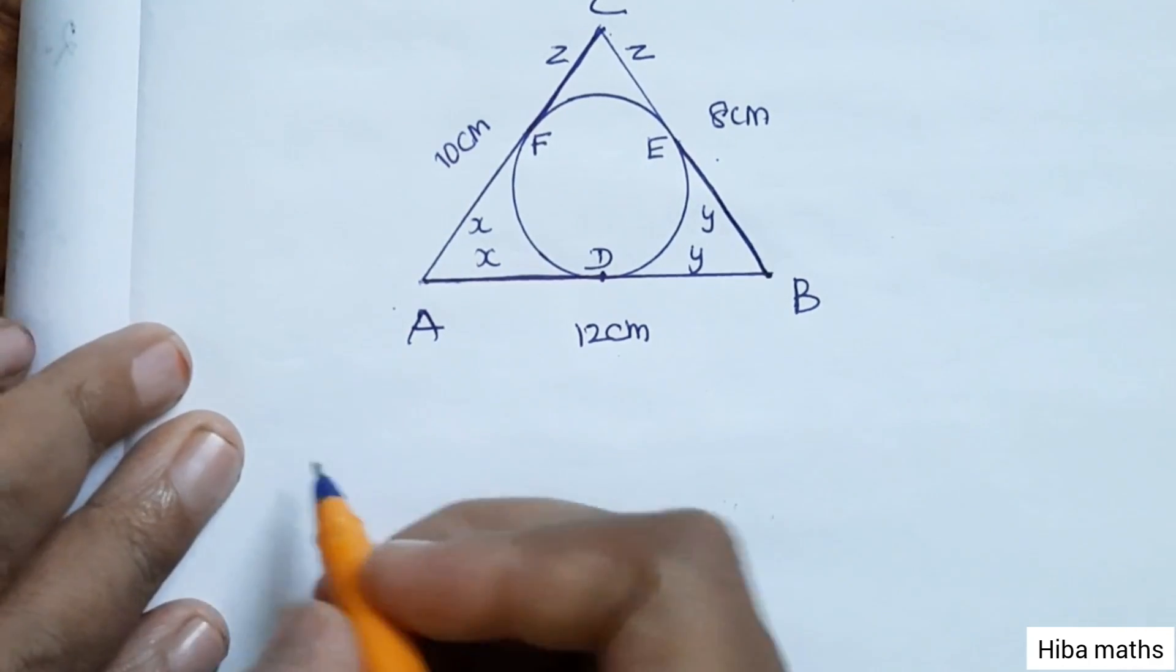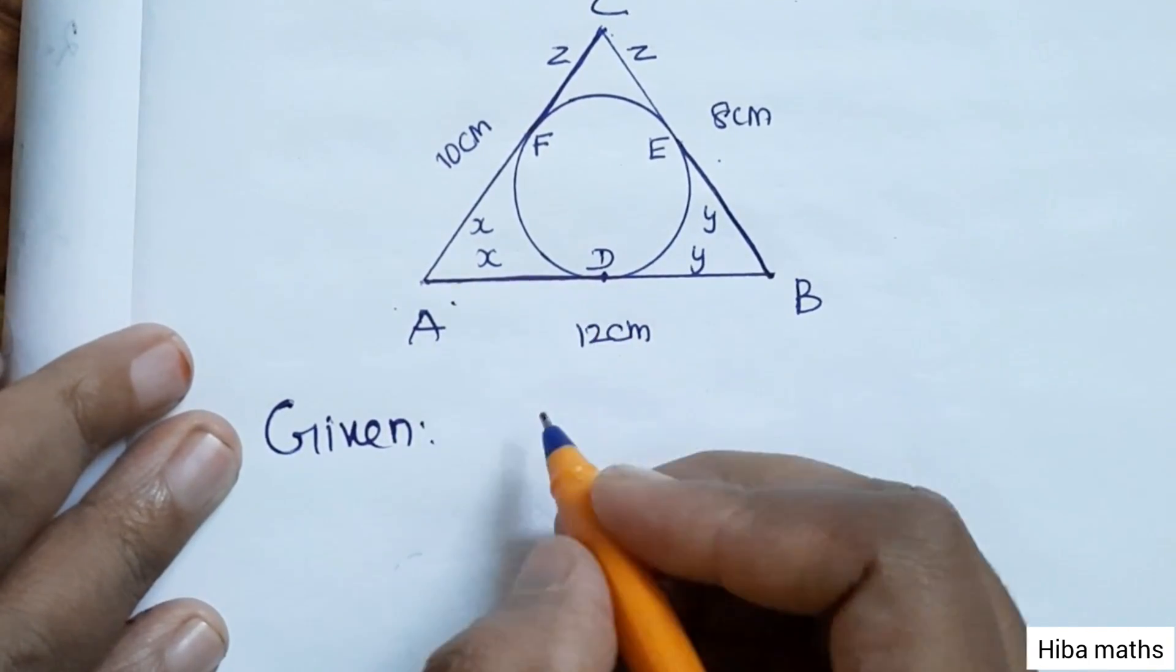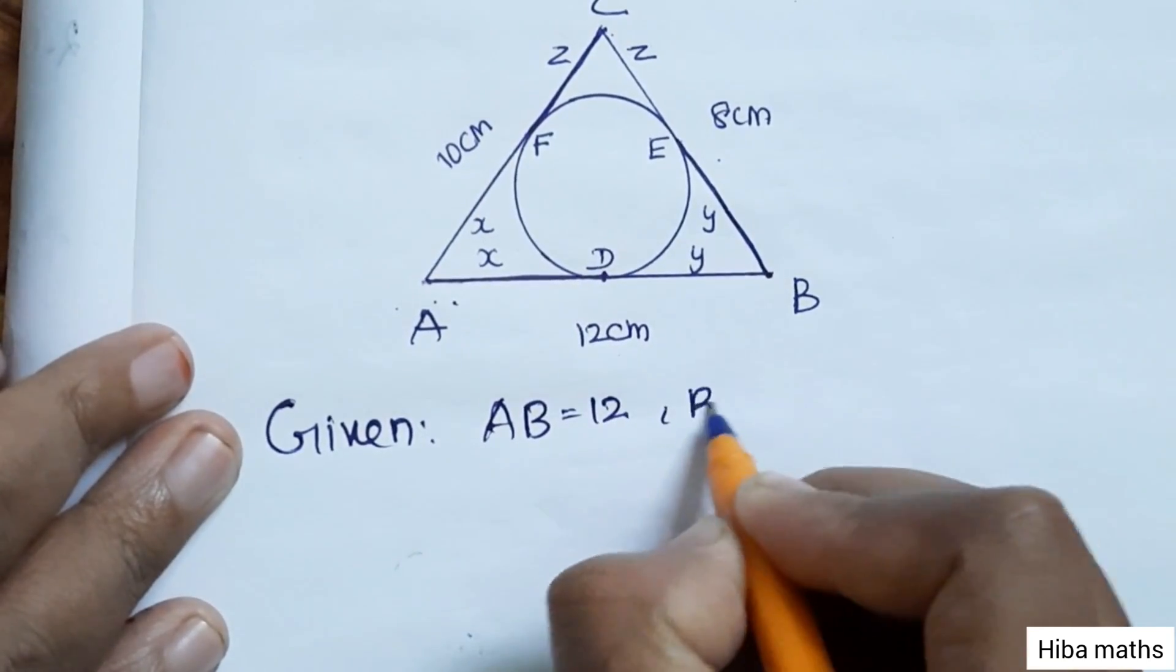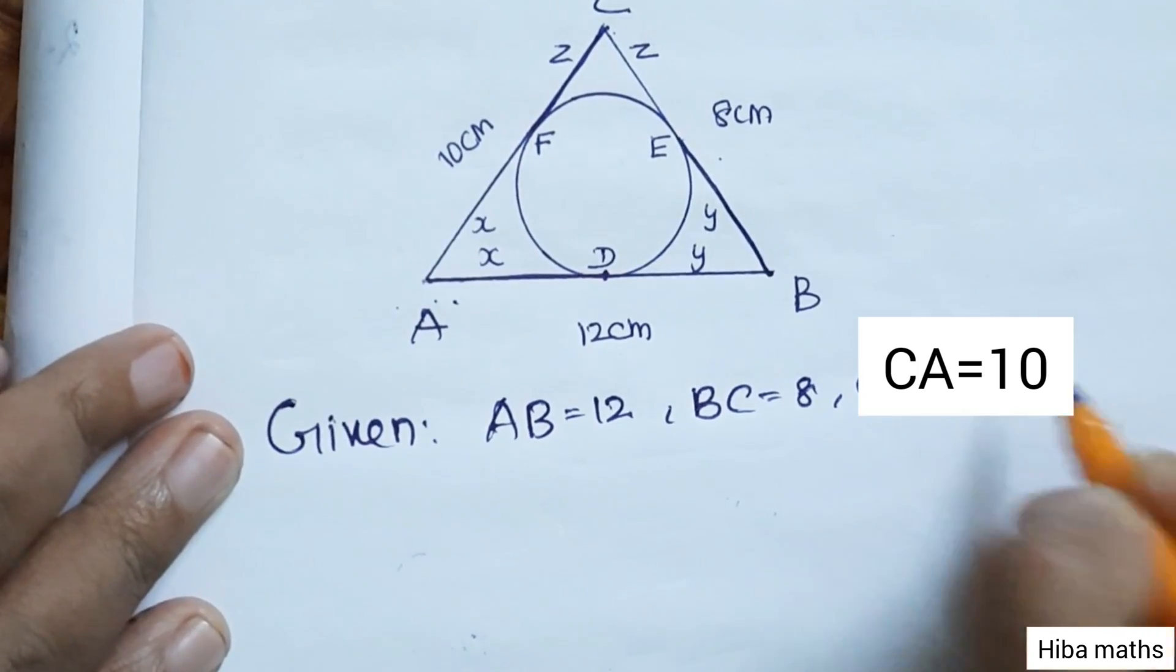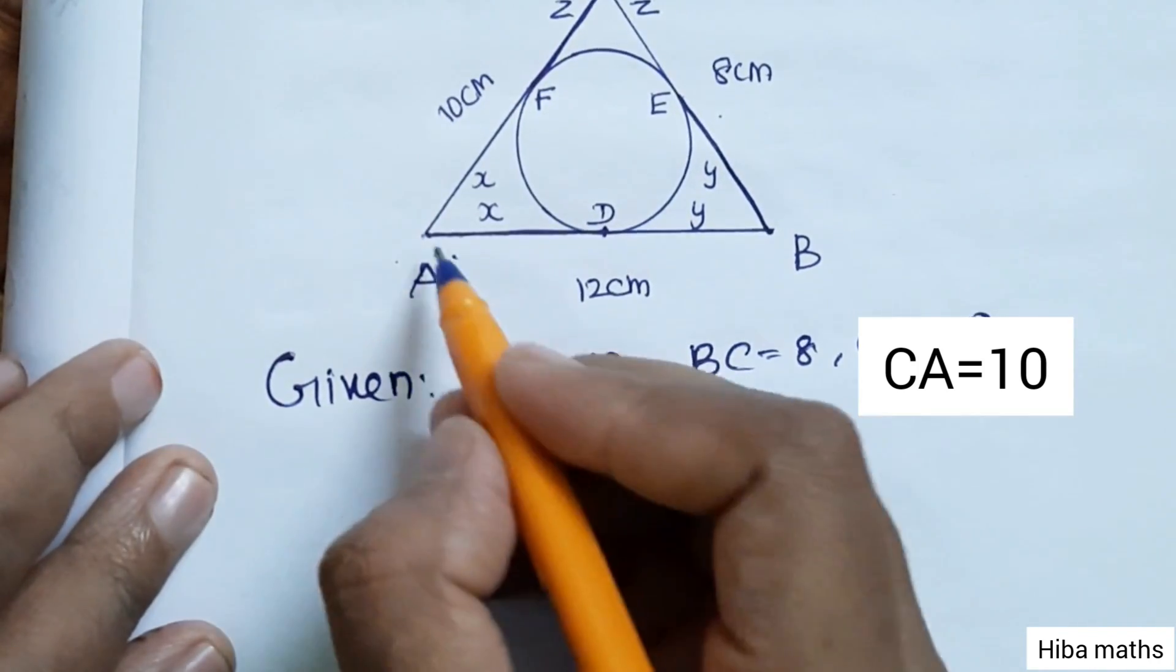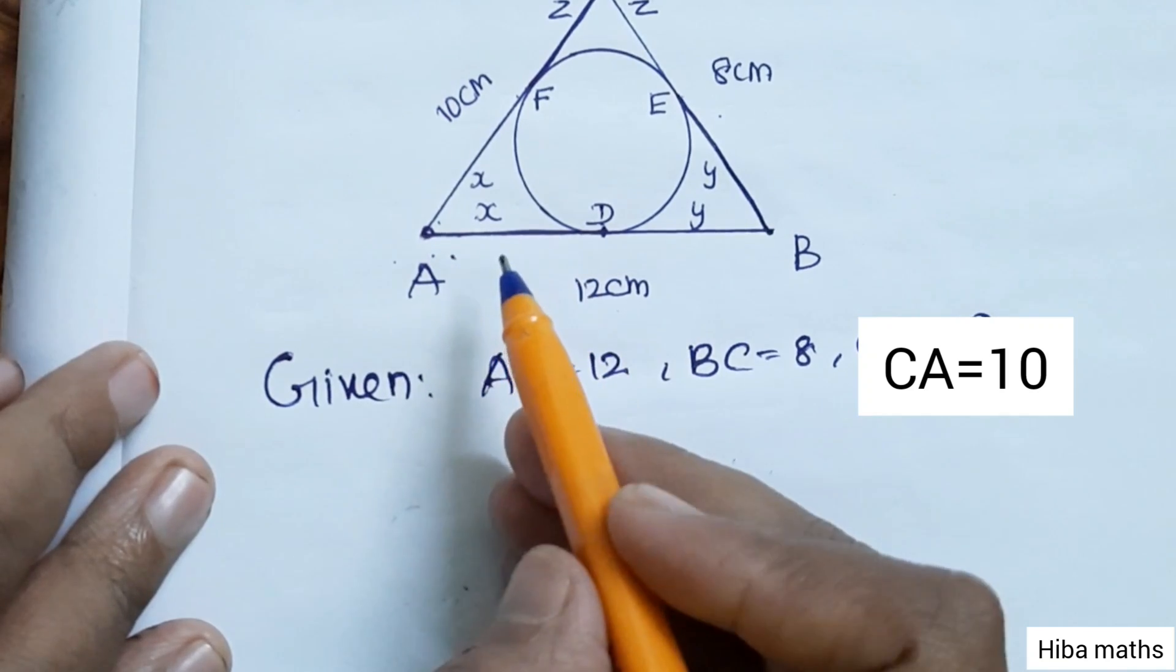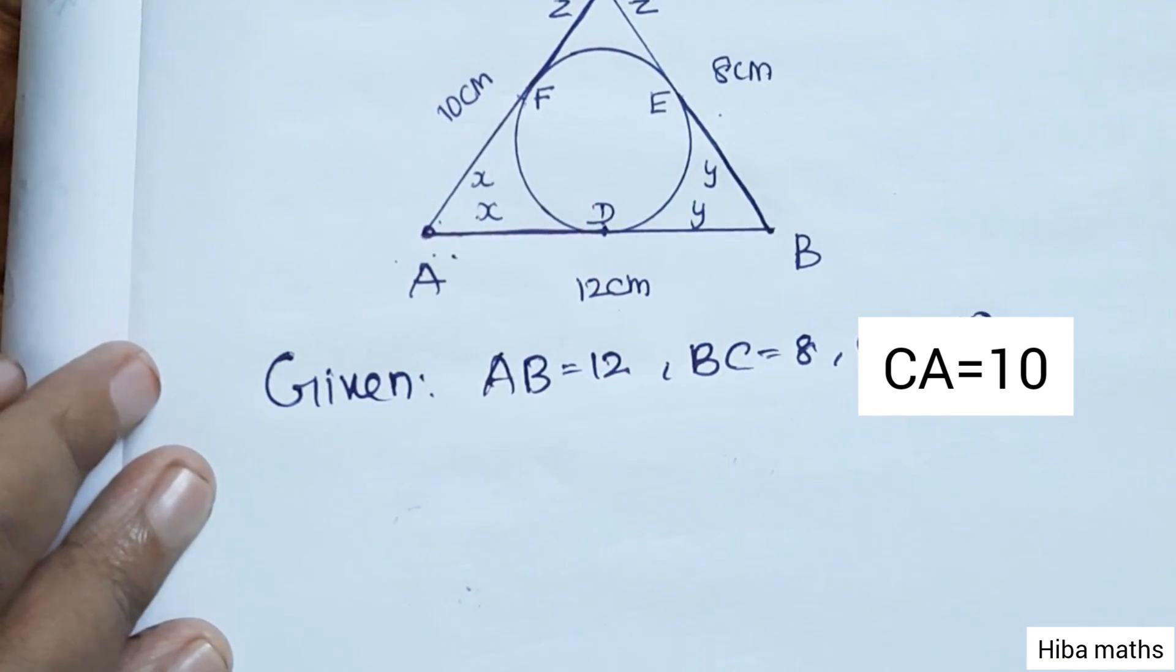Looking at the diagram, the given data is AB equals 12, BC equals 8, CA equals 10. AD and AF are equal values. I have already told you, tangent from the same point touching the circle is equal, so we have to mention it.